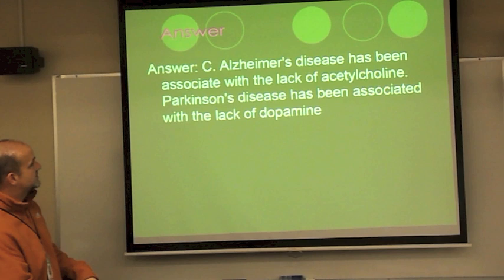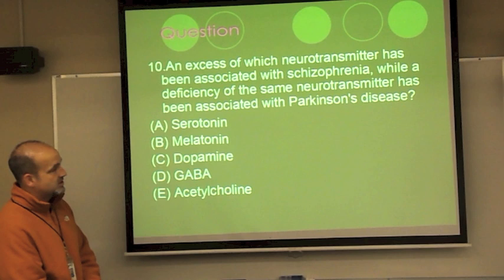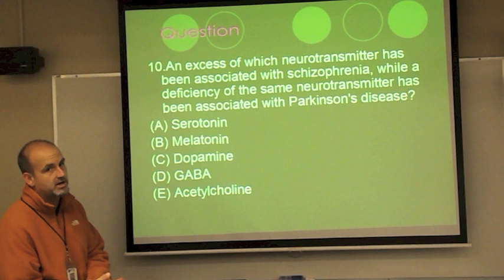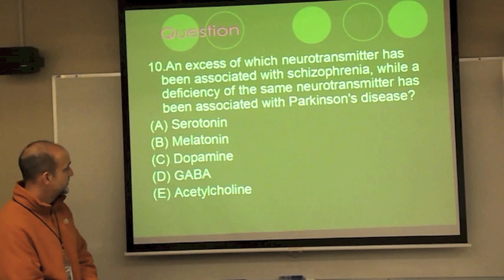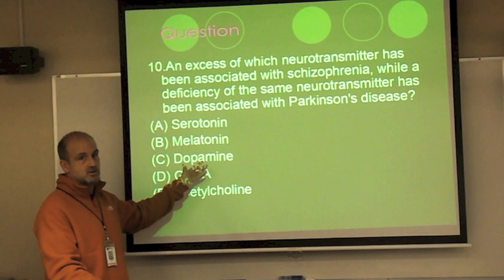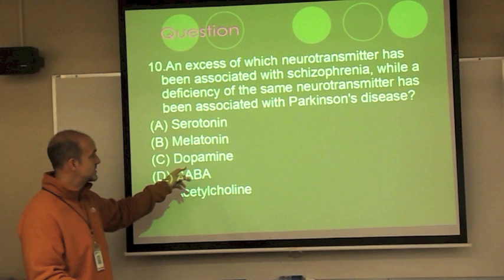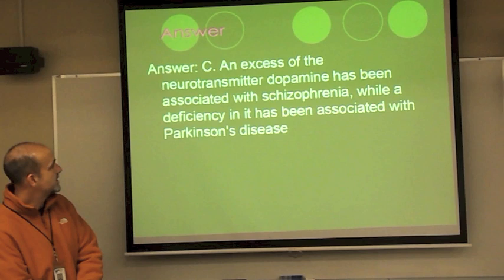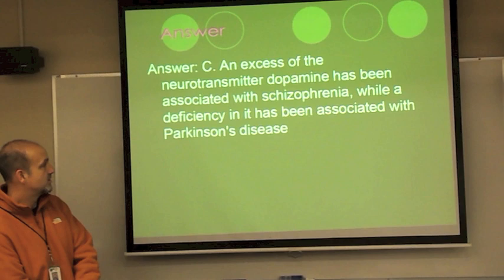Another question: an excess of which neurotransmitter has been associated with schizophrenia, while a deficiency of the same neurotransmitter has been associated with Parkinson's? The choices are serotonin, melatonin, dopamine, GABA, or acetylcholine. The answer is dopamine — when you run out of dope you go to the park, when you have too much dope you experience schizophrenia. Excessive dopamine leads to schizophrenia; deficiency leads to Parkinson's.